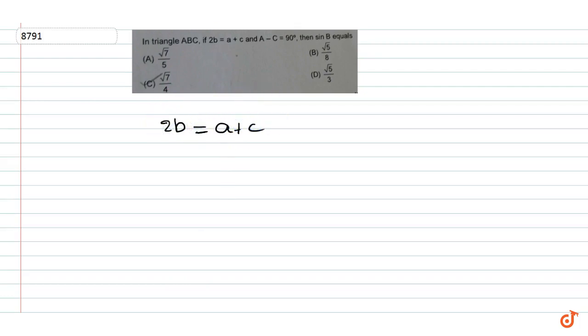Since b is proportional to sine b, and a is proportional to sine a, and c is proportional to sine c, we can write this as 2 times sine b is equal to sine a plus sine c.